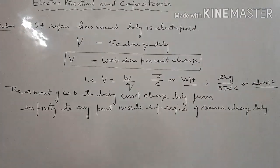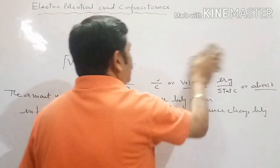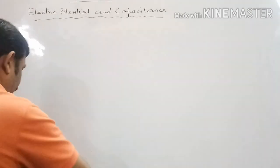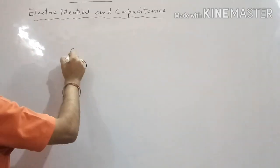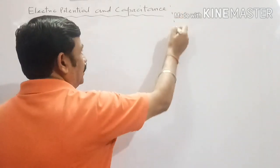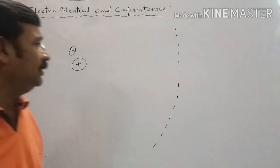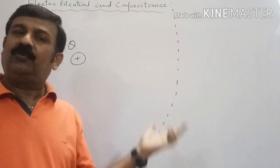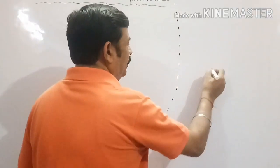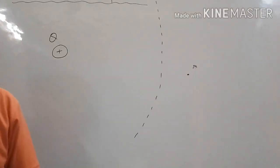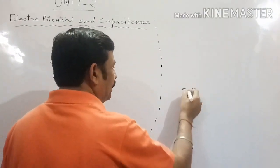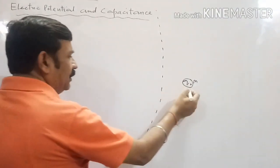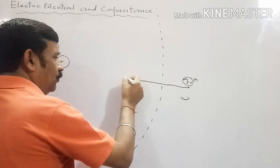Now, what is the meaning of electric potential difference? Suppose we have taken a source charge body and this is its electric field region. We discussed what an electric field region means in the first chapter. Every charge body has its electric field region extending nearly up to infinite distance. So if we assume a point M kept at infinity, we place an experimental charge body Q₀ there, and we move it inside the electric field region up to point A.